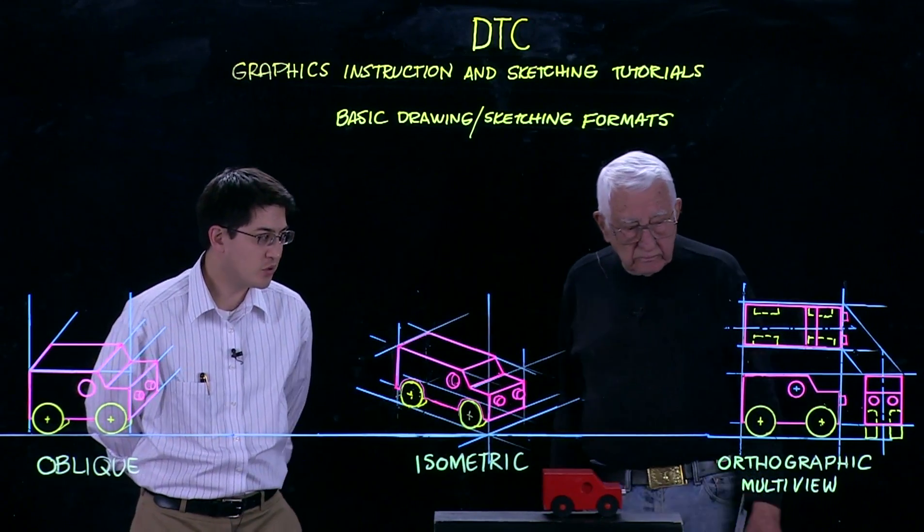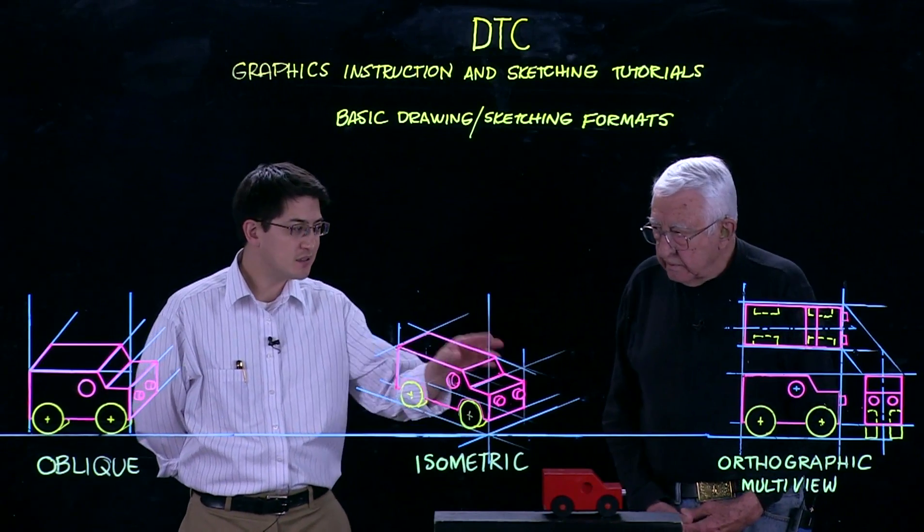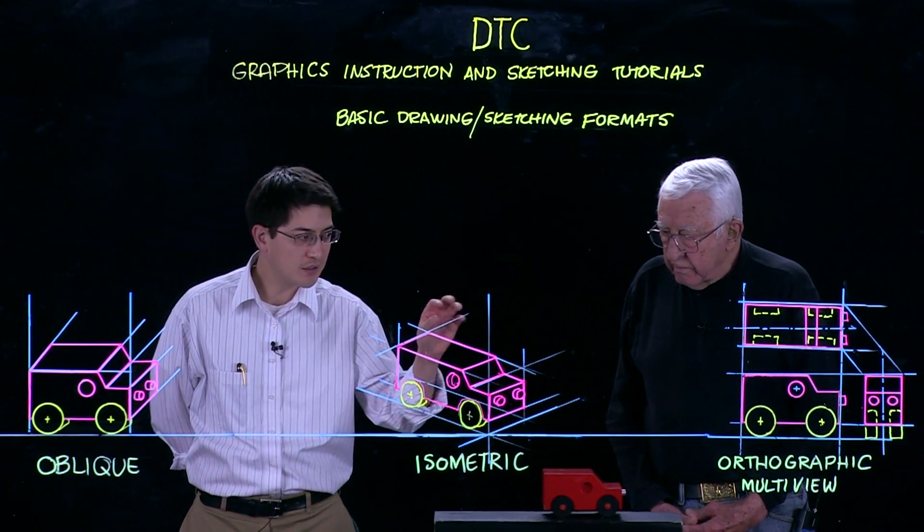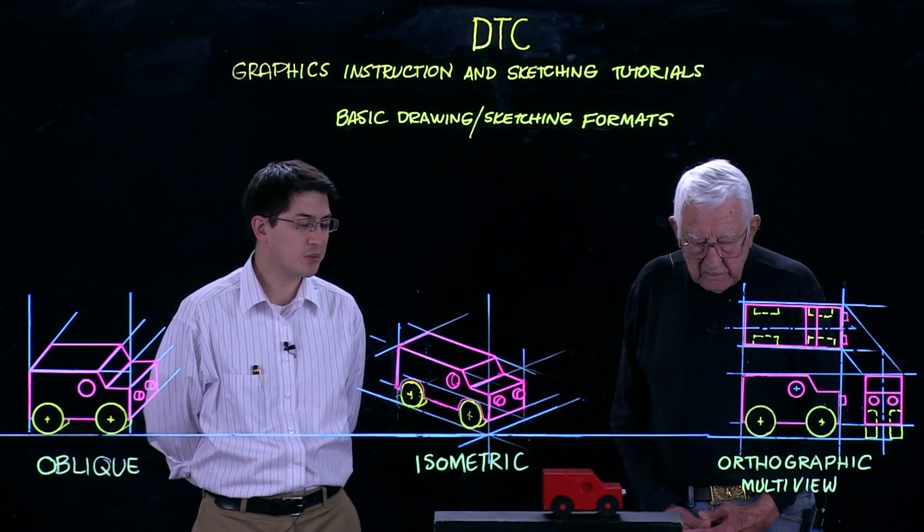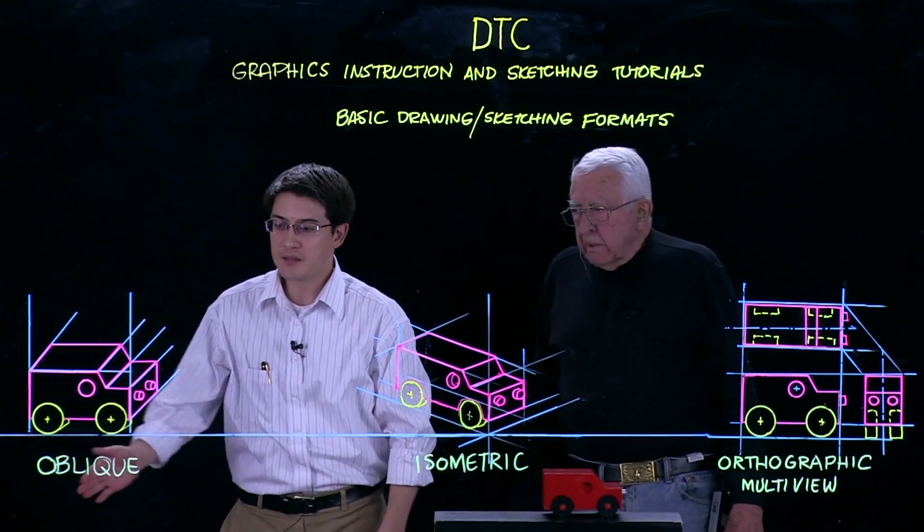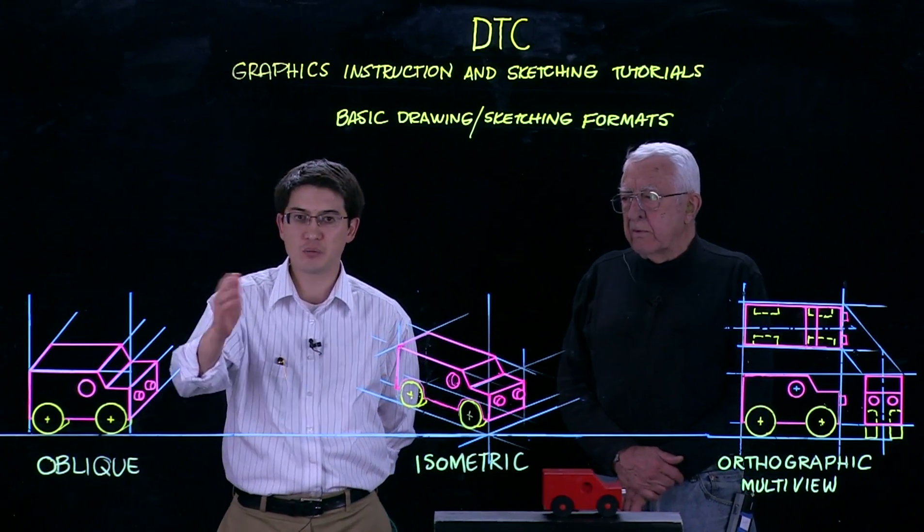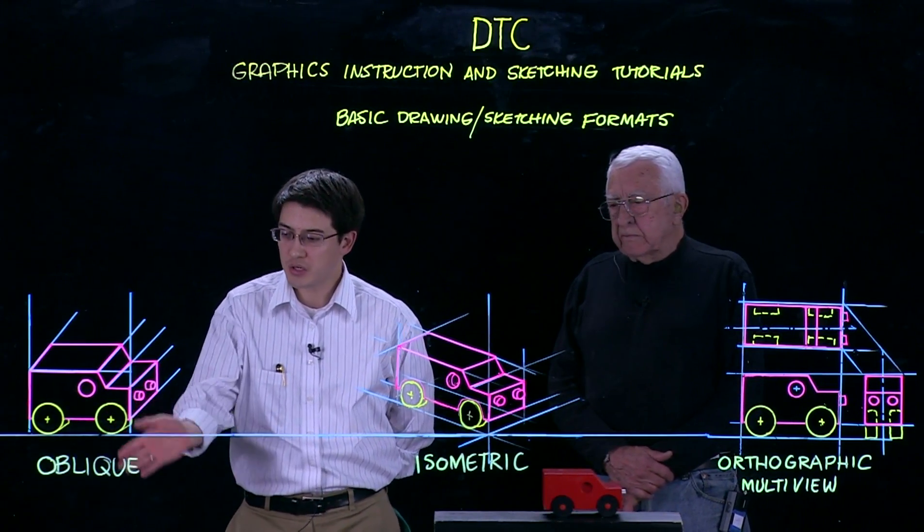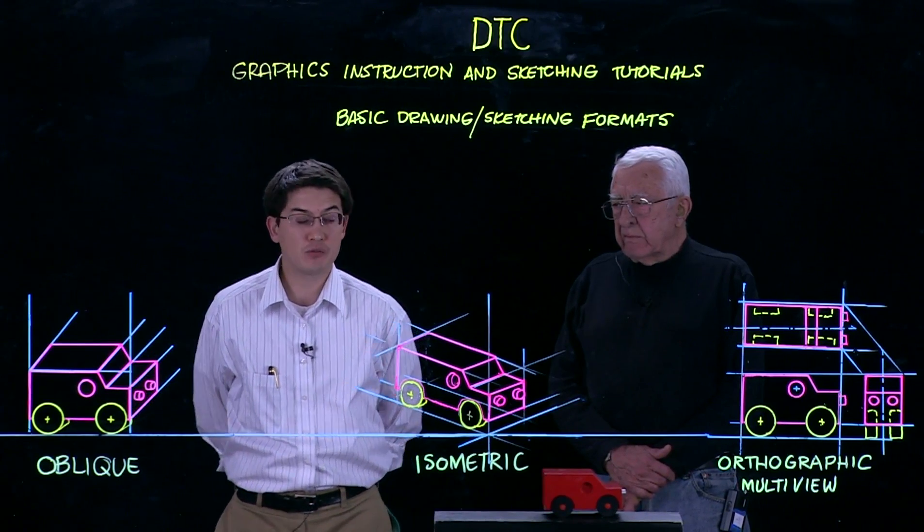As you can see with the multi-view though clearly we're dealing with two-dimensional information. The easiest way to take and make the three-dimensional sketch though using the information from the multi-view is to take the front view that's shown there, start with that and then extend off the third dimension at 45 degrees as we've done here with these blue lines and then you can create the oblique with this three-dimensional view building directly off of your front view.